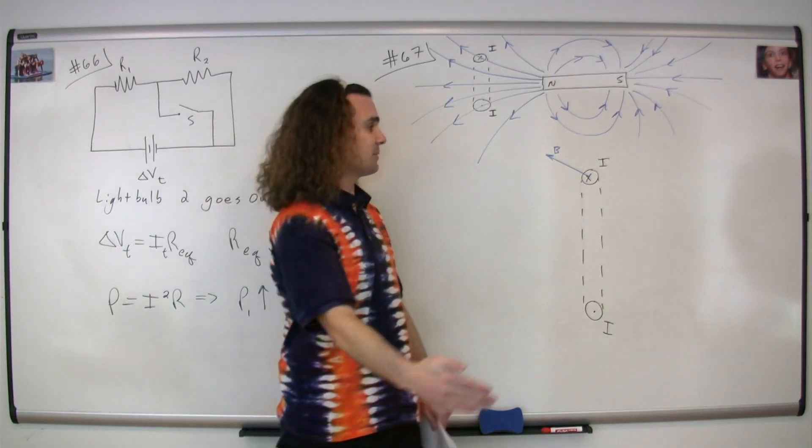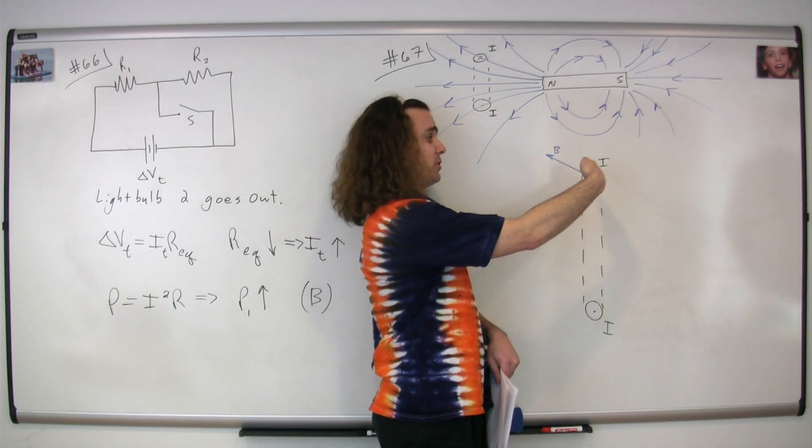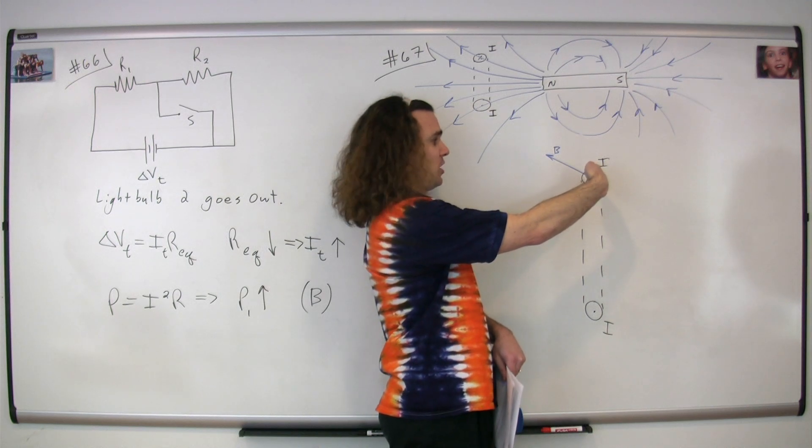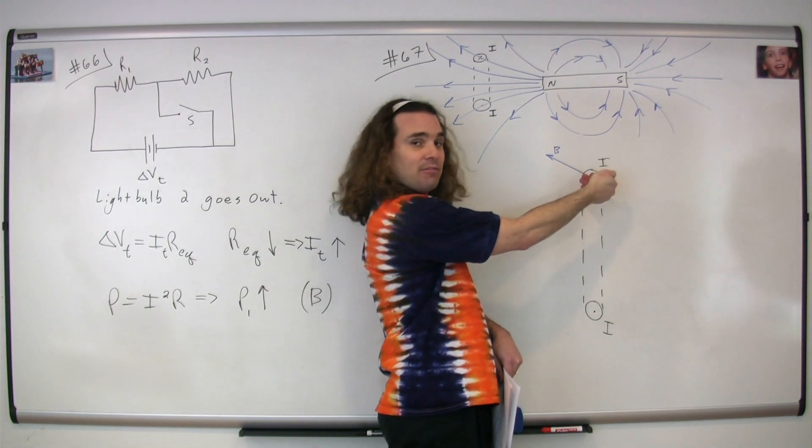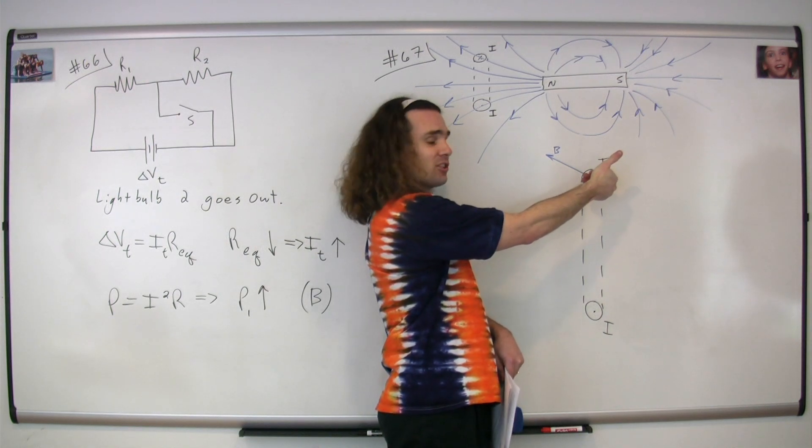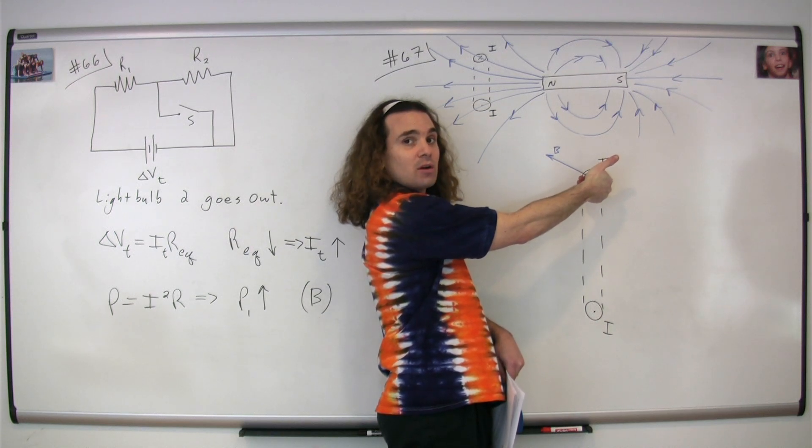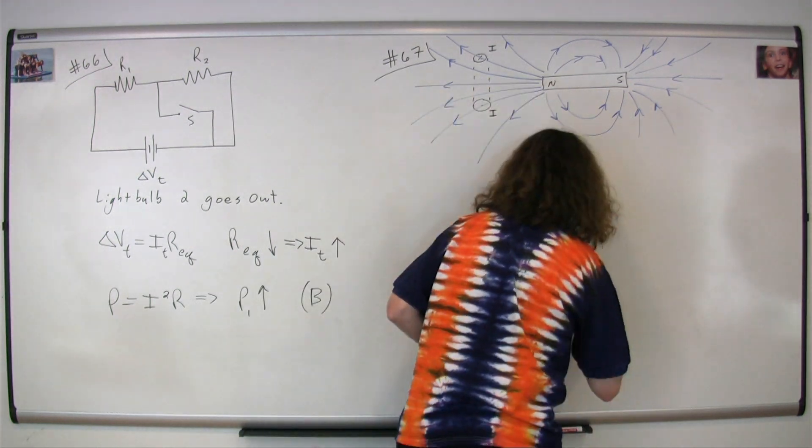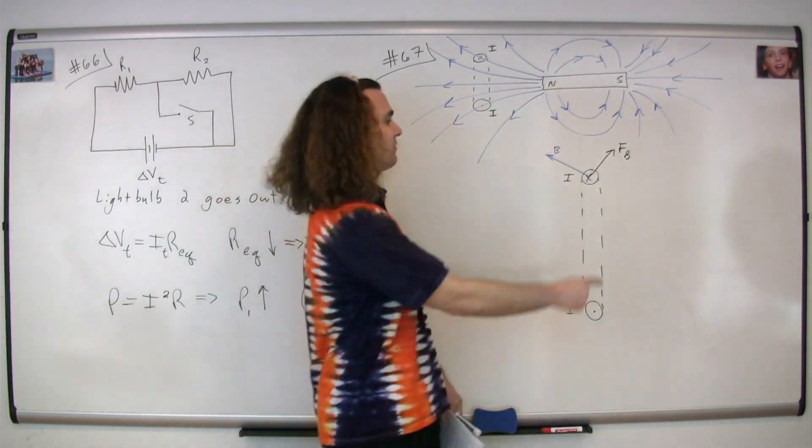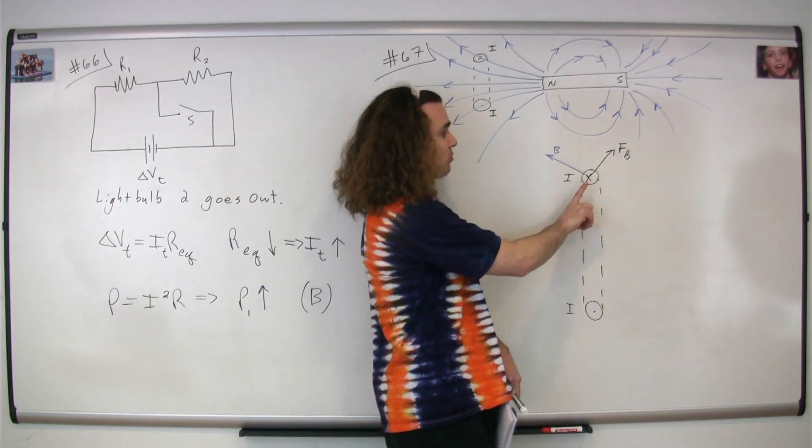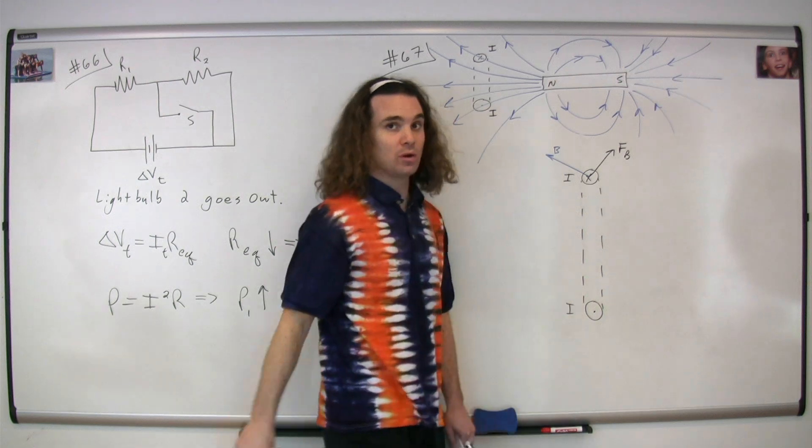Taking the fingers of our right hand, pointing them in the direction of the current flow, which is into the board at this point, curling them in the direction of the magnetic field, our thumb points in this direction, which is the direction of the magnetic force, which unfortunately is directly through the eye that I drew on the board. So the magnetic force at the very top of the loop is mostly up and a little bit to your right.